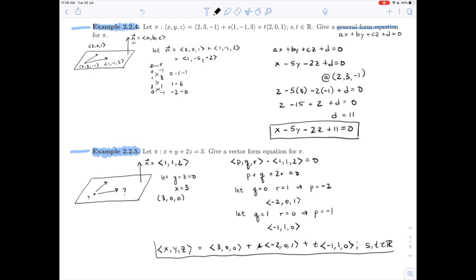There are many, many, many others, depending on the choices that one makes to find points and vectors. But there is one valid expression of the vector form equation for our plane π.